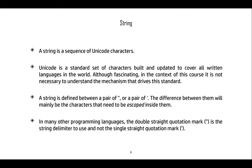So back to strings. A string is a sequence of Unicode characters. Unicode is a standard set of characters built to hold the characters from all languages in the world. It's constantly being upgraded and updated to integrate more languages. A string is defined between a pair of quotation marks. It could be single straight quotation marks or double straight quotation marks. And the difference between them is mainly going to be the characters that need to be escaped inside of them.